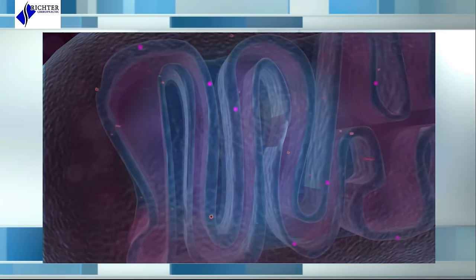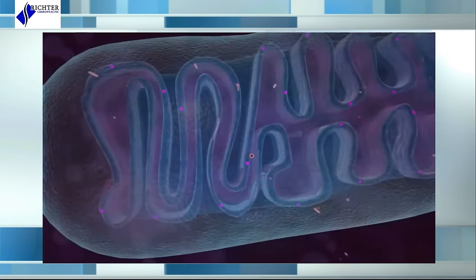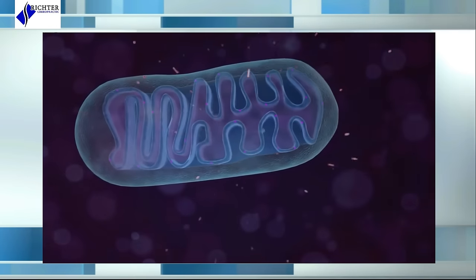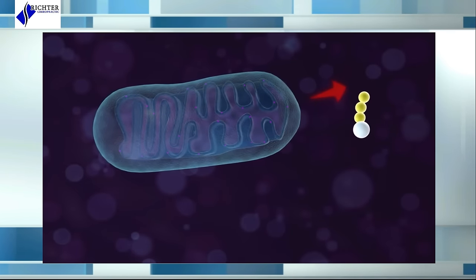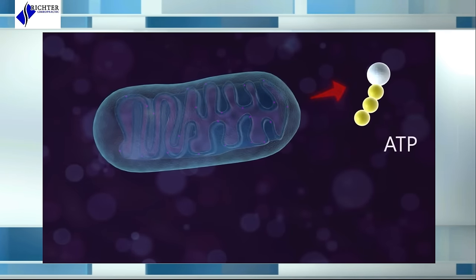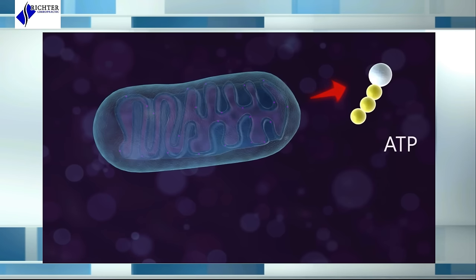Cytochrome C is a vital component of the electron transport chain that drives cellular metabolism. As light is absorbed, cytochrome C is stimulated, leading to increased production of ATP, the molecule that facilitates energy transfer within the cell.